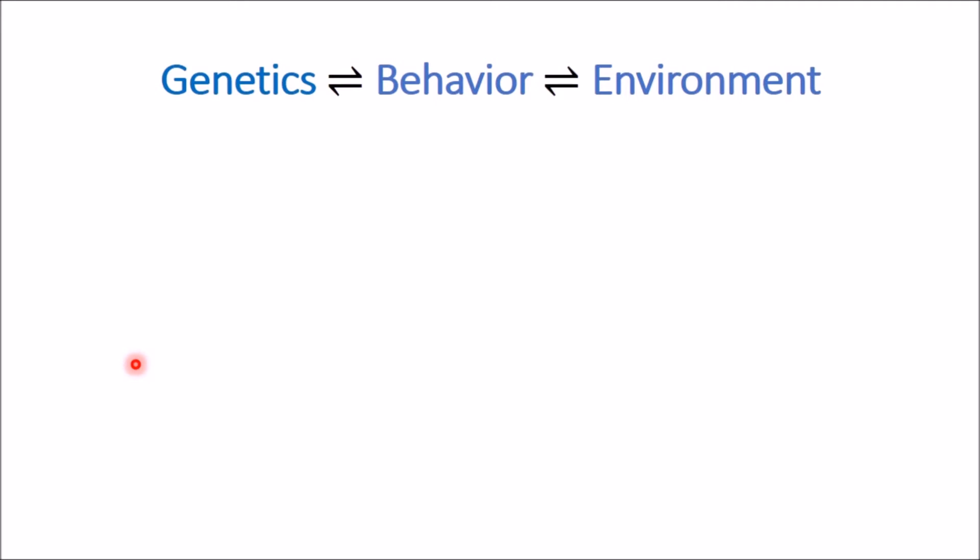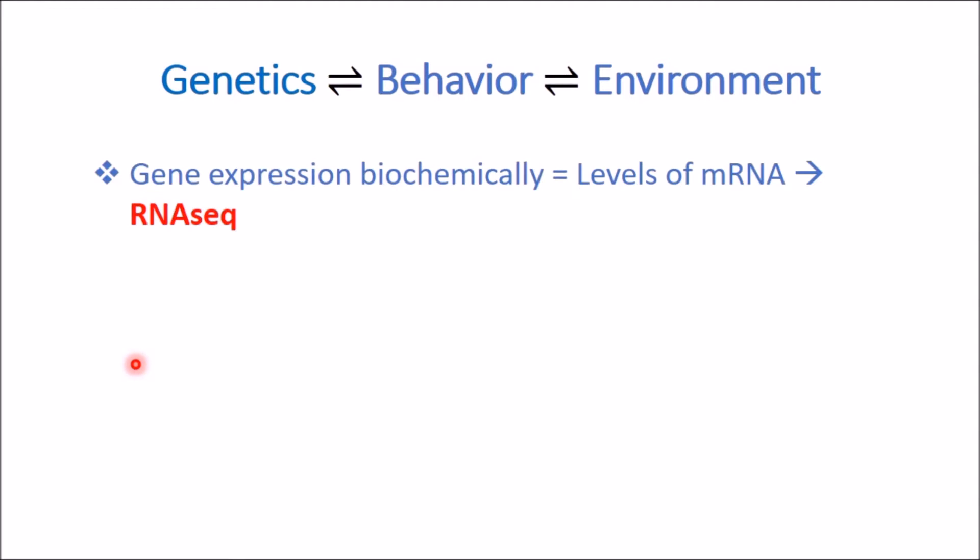There's an interplay between genetics, behavior, and environment. Psychological and social behaviors are correlated with the interaction of multiple genes — another way of saying polygenic — and environmental factors. We'll consider this interplay at both the individual and population level. When talking about gene expression, you're talking about the expression of RNA or DNA, which is correlated to RNA, so we can determine gene expression biochemically via levels of RNA or mRNA for protein-coding genes.